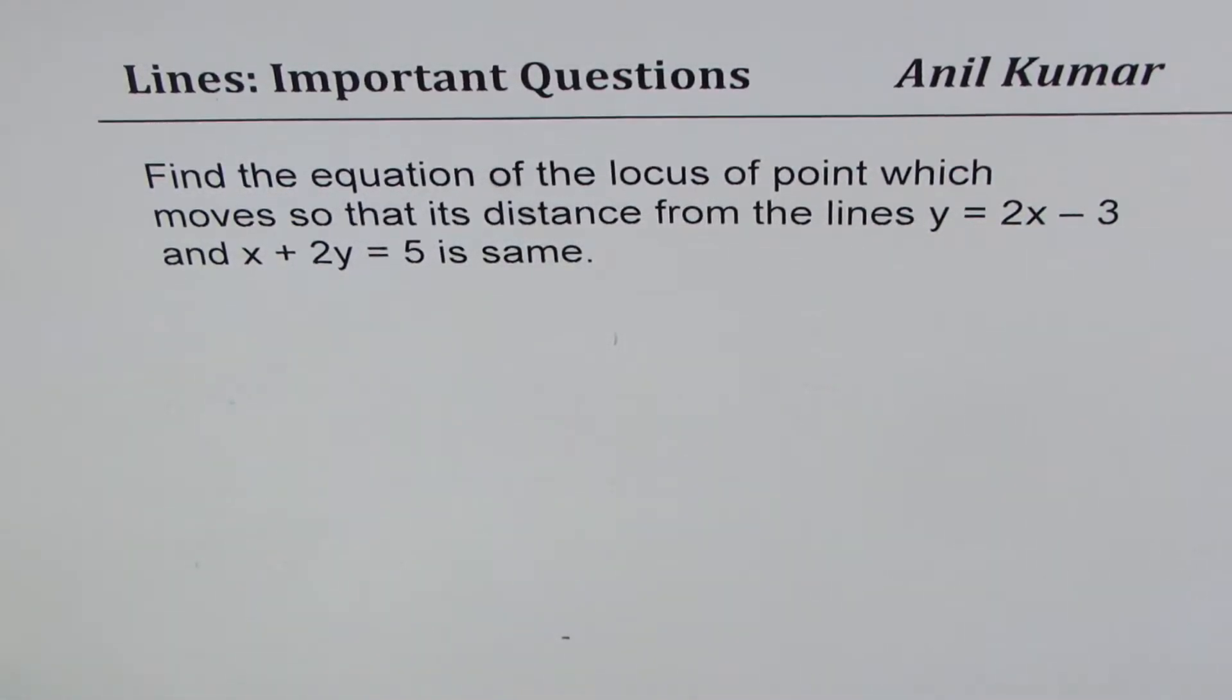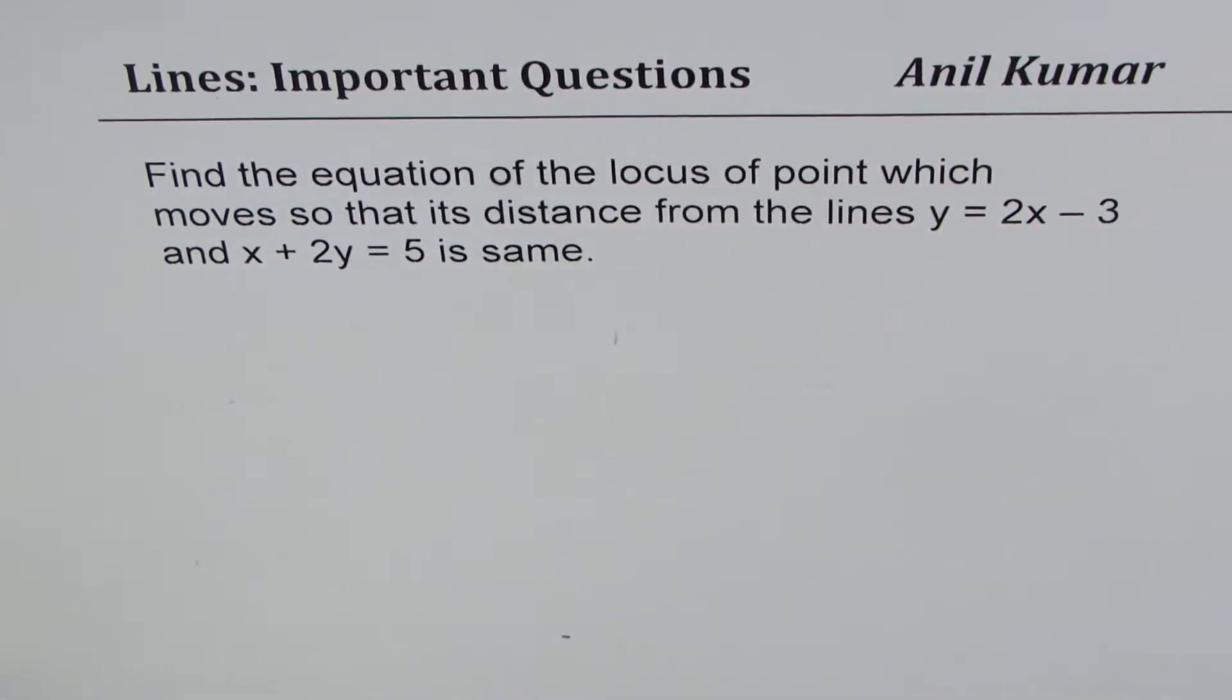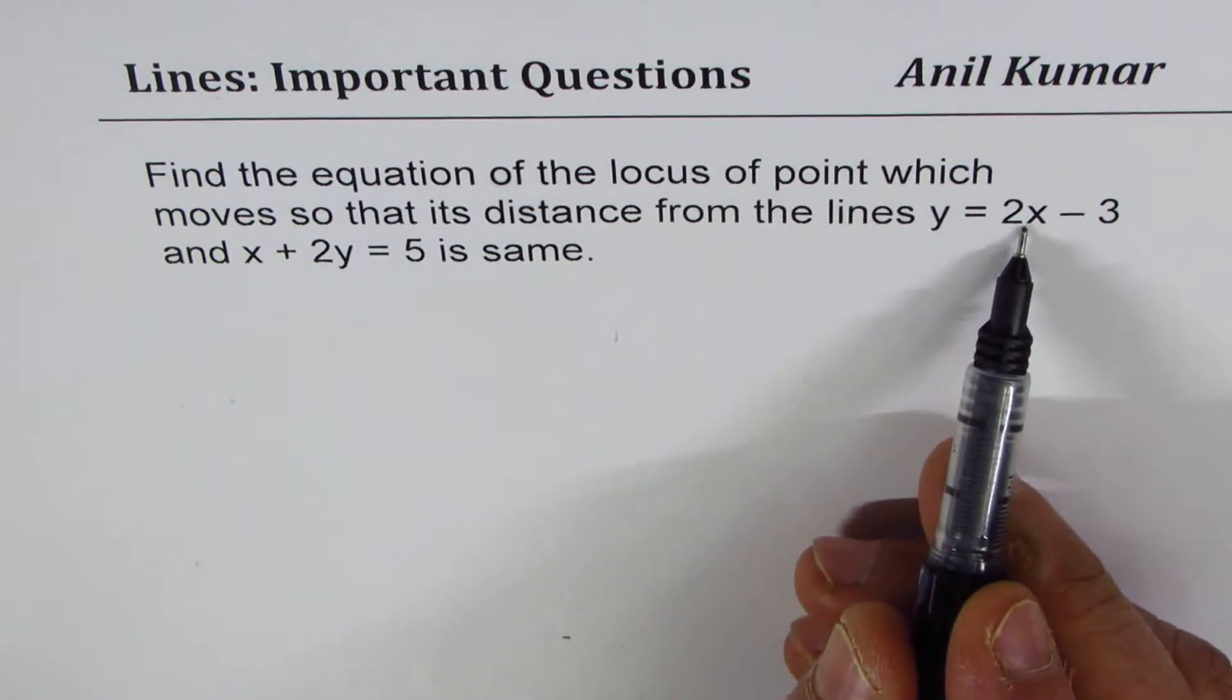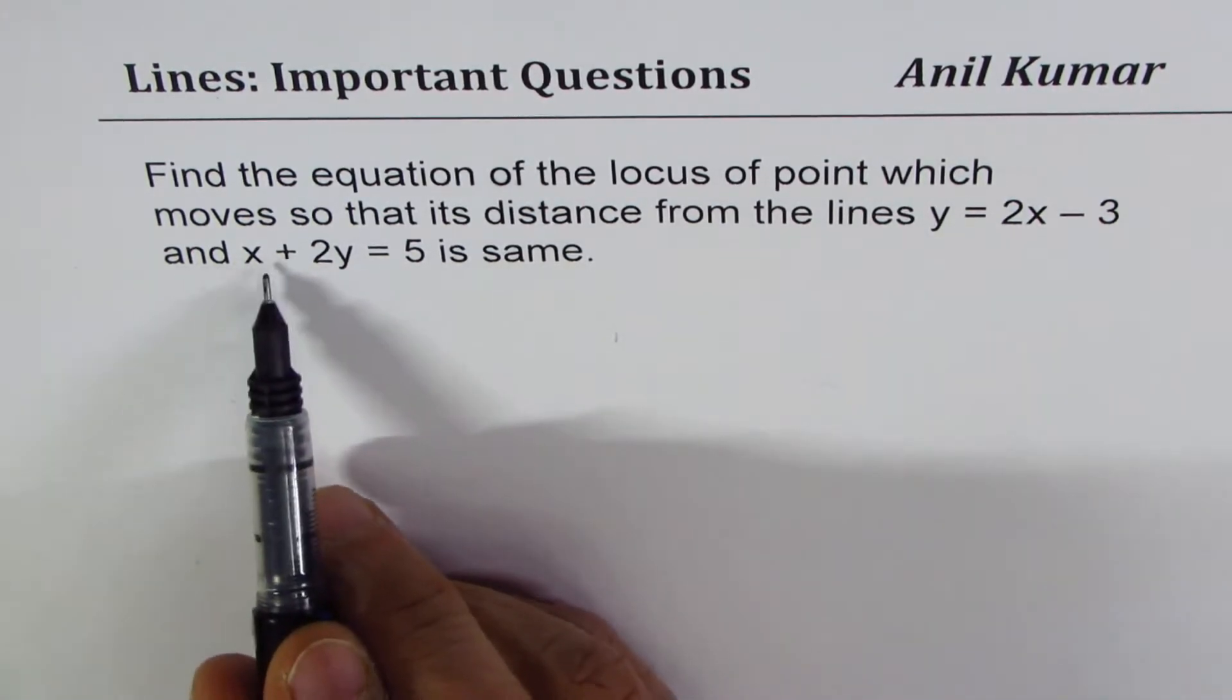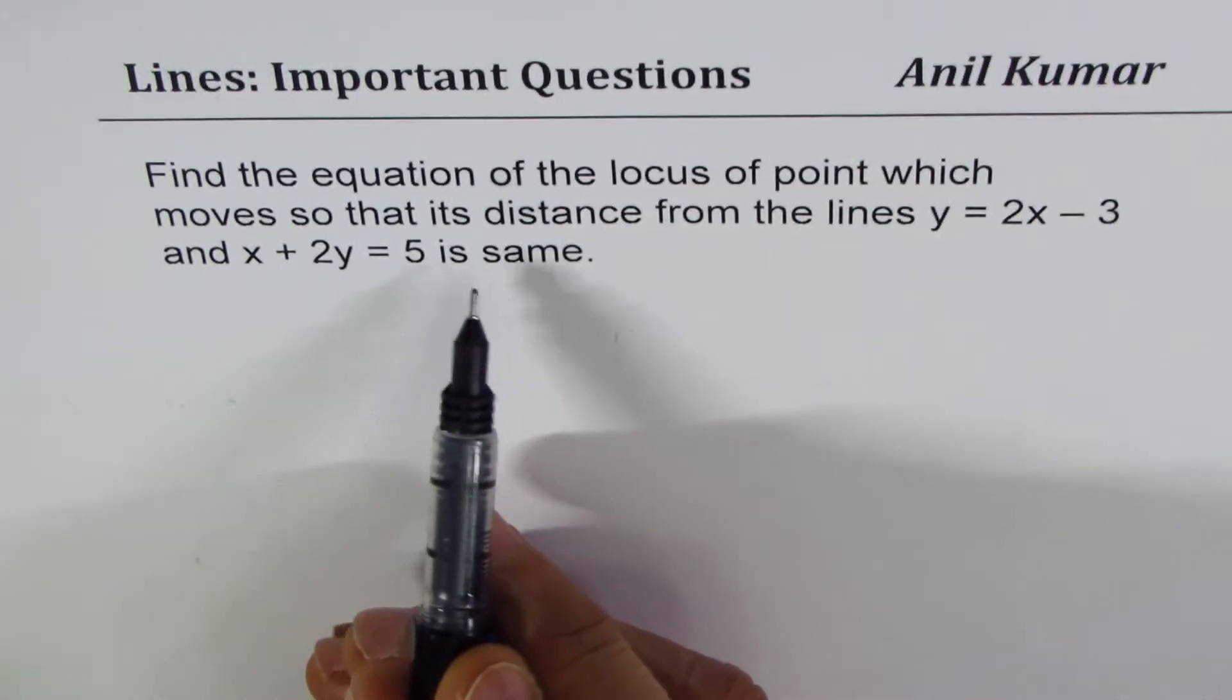I'm Anil Kumar sharing with you some interesting questions on pair of lines. The question here is, find the equation of the locus of points which moves so that its distance from the line y equals 2x minus 3 and x plus 2y equals 5 is same.